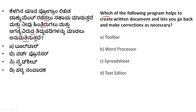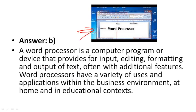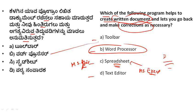Which of the following programs helps to create a written document and lets you go back and make corrections? Options: Toolbox, Word Processor, Spreadsheet, Text Editor. Simple question - the answer is Word Processor. Word processor is application software. MS Office is application software. Spreadsheet is MS Excel, used for other operations. So B is the right answer.